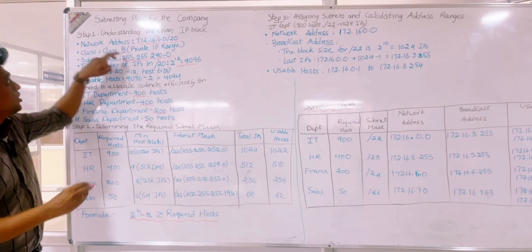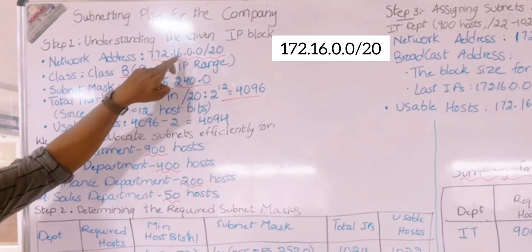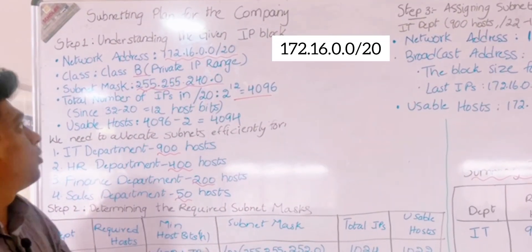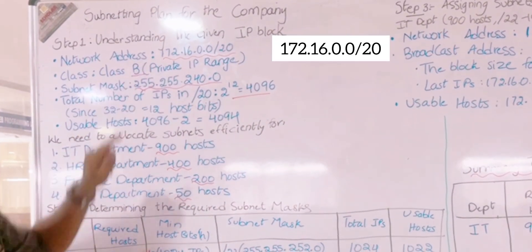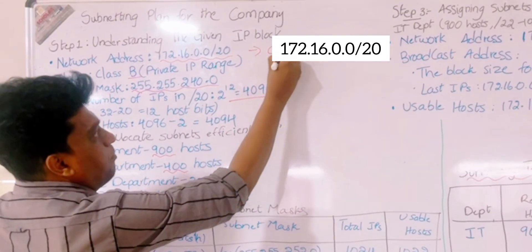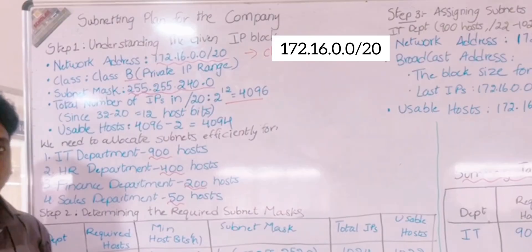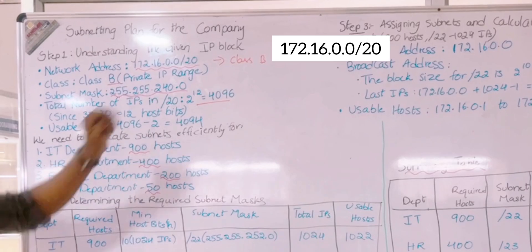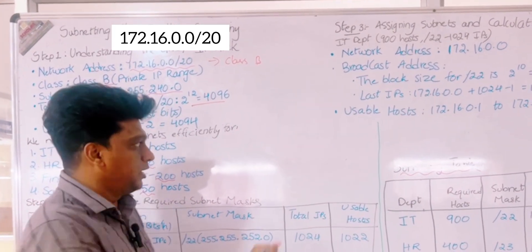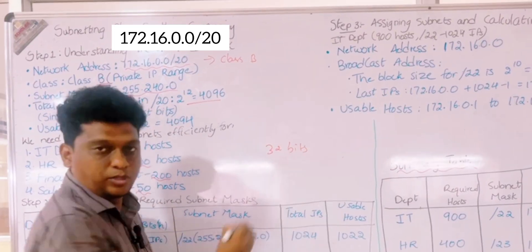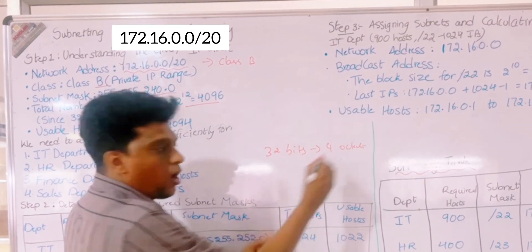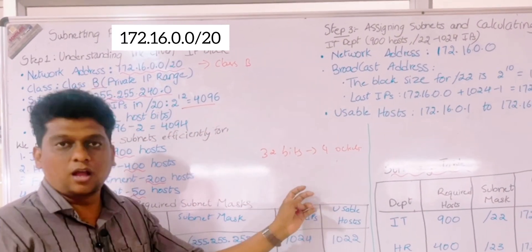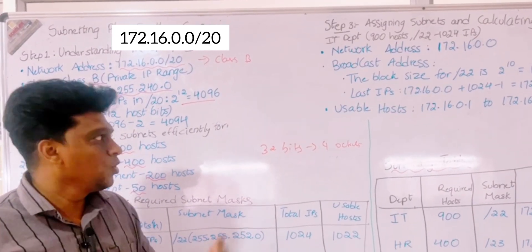Step by step we can see the process. When the network address is 172.16.0.0/20, we first identify the class that IP address belongs to. It is 172, which comes under Class B, because 128 to 191 all addresses come under Class B. The IP address is divided into 32 bits of four octets — 8, 8, 8, and 8. Slash 20 means the first 20 bits are 1s and the remaining 12 are 0s.